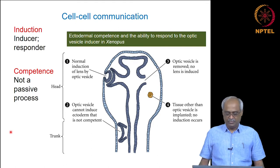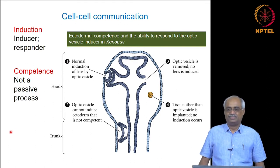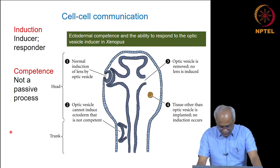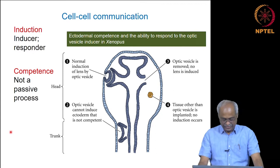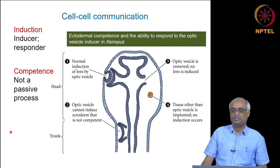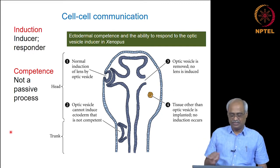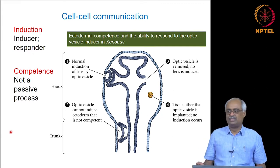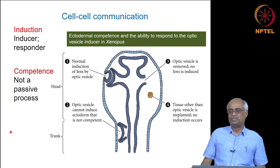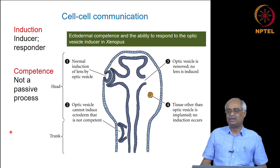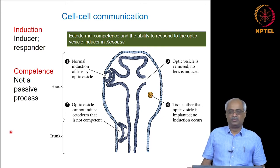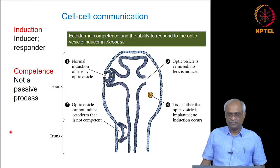We are continuing on the same theme of morphogenesis. Today we are going to move closer towards cell-cell signaling. Before we get into the molecular pathway of cell-cell signaling, we need to look at some basic principles that govern the rules of interaction among cells. These basic things are what we are going to look at today.